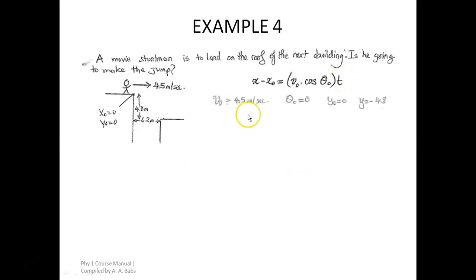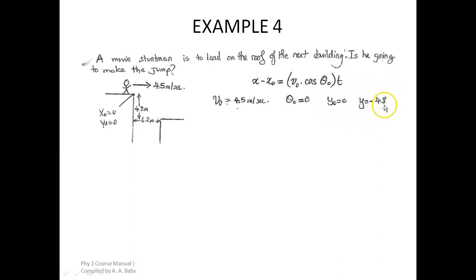What parameters do we have? Our v₀ is 4.5 meters per second as given. θ₀ is 0 because the stuntman is standing on the horizontal, so the angle made with the horizontal is 0. The initial vertical position is 0, and the final vertical position is minus 4.8 meters. Why minus 4.8? Because the movement is downward, and when movement is downward it is negative — that is why y is represented as negative 4.8 meters.